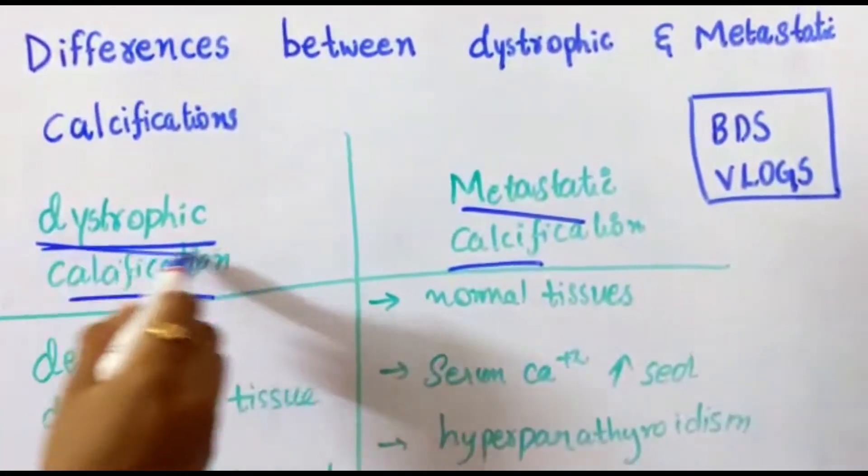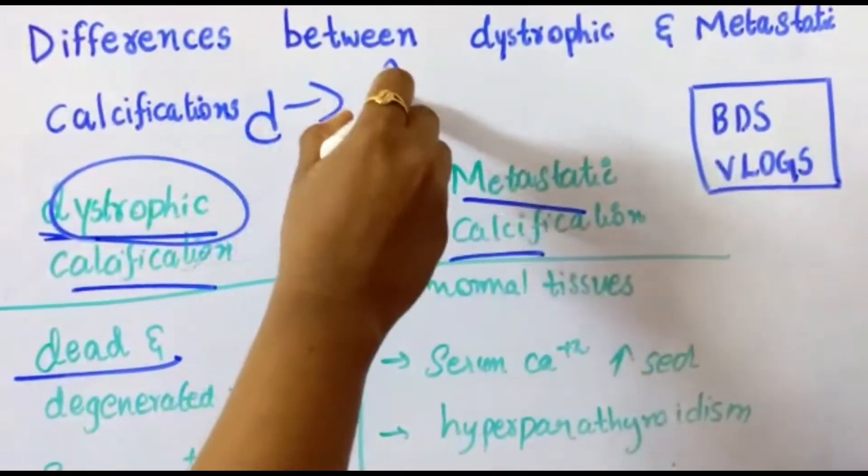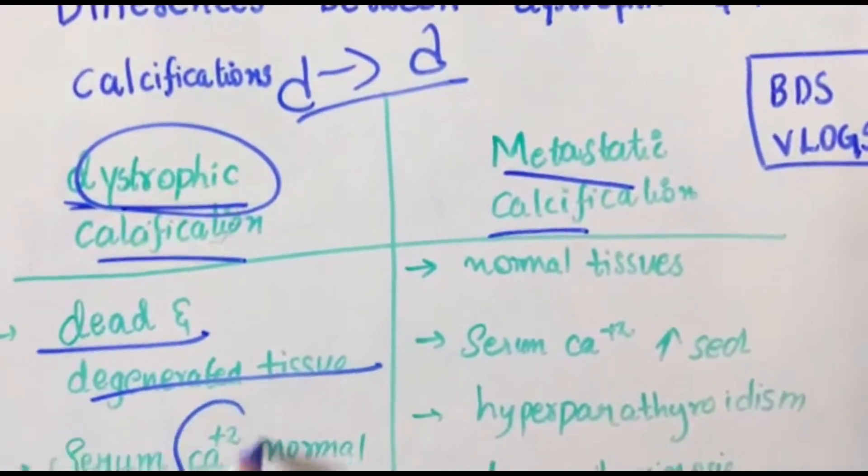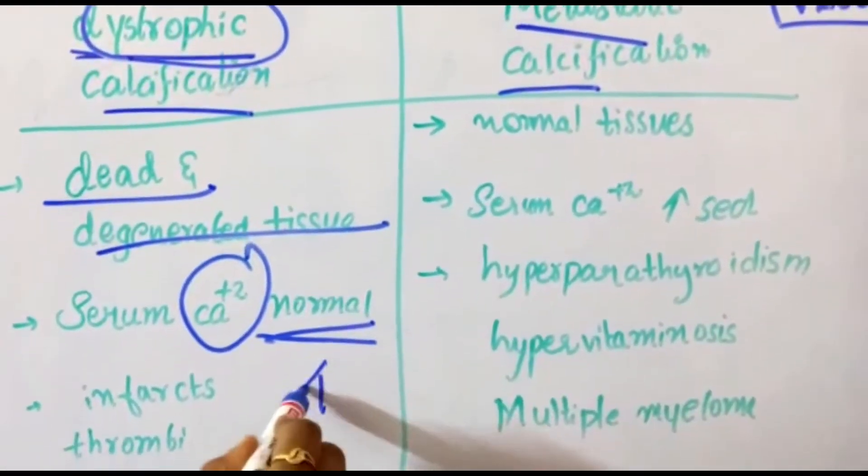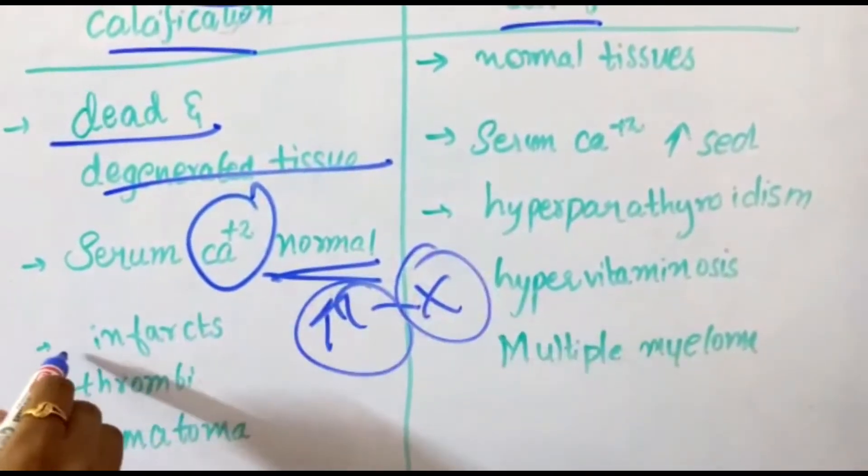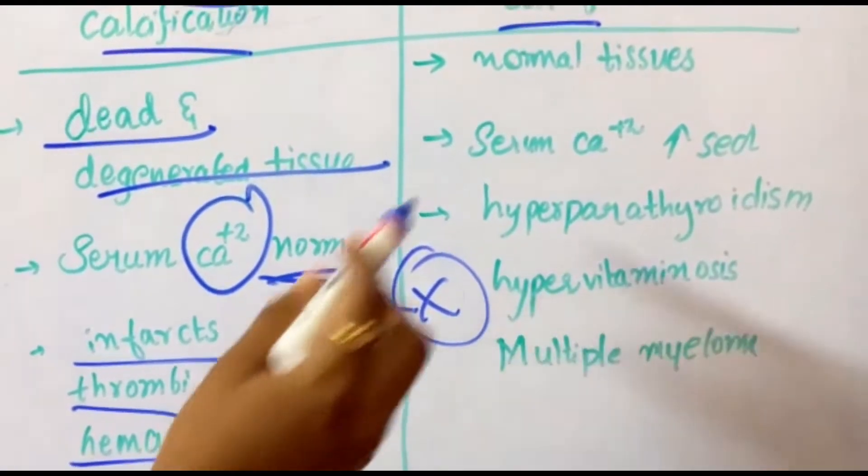Dystrophic calcifications are generally seen in dead and degenerated tissue. D goes for dead. Here calcium metabolism is normal, with no increase in serum calcium levels. Examples are infarcts, thrombi, and hematomas.